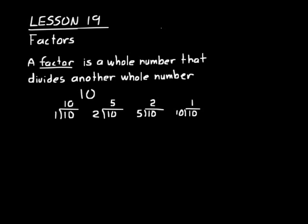Let's try some more practice figuring out what factors are. List the factors of 6 — what whole numbers can you divide into it? Well, you could have 1, 2, 3, and 6. Another way to think about factors is whole numbers you could multiply together to get that product. To get a product of 6, you could multiply 1 times 6, 2 times 3, or 3 times 2.